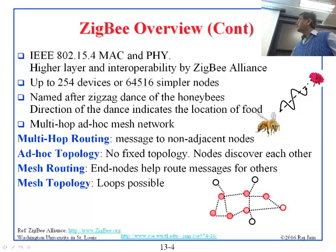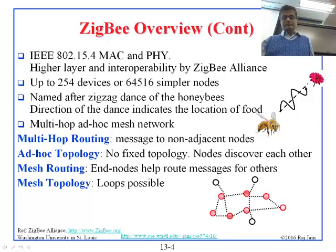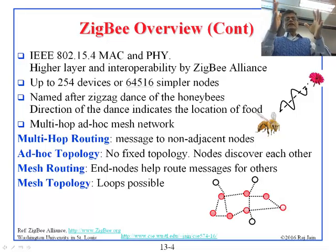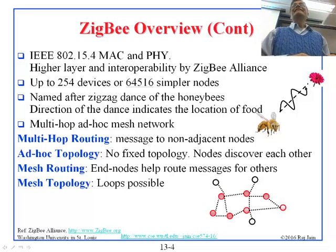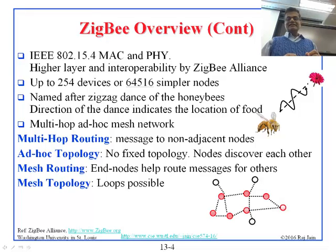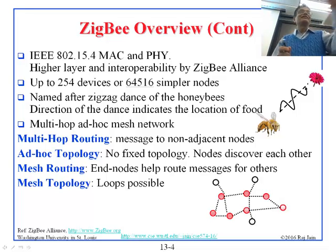The ZigBee Alliance decided they can have up to 254 devices, or 64,000 simpler nodes. Basically, all of these protocols are designed for very large networks, but if you have 64,000 nodes, nothing will work anyway — 254 is closer to the truth. ZigBee is named after the zigzag dance of the honeybees. Honeybees fly in a zigzag, and the direction of the dance indicates the location of food. So if a bee wants to communicate where food is, it goes in a zigzag pattern — that is what ZigBee represents.